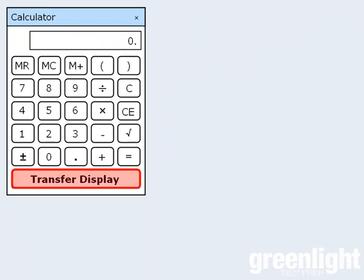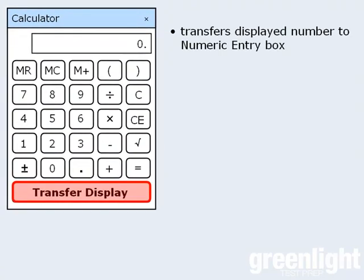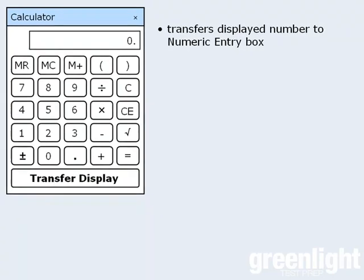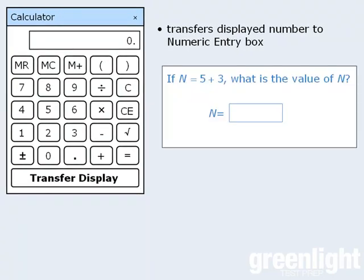The last button to discuss is the transfer display button. It transfers the calculator's displayed number to the answer box in a numeric entry question. This feature is available only when you're working on a numeric entry question. All other times the button is grayed out. So let's say you're working on a numeric entry question, and after performing some calculations, your answer is in the display window. From here, just press the transfer display button, and that displayed value will appear in the answer box.